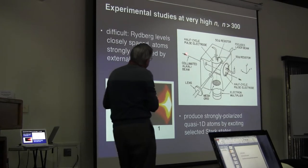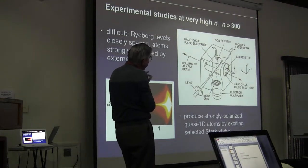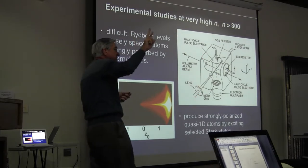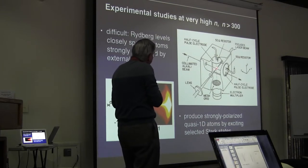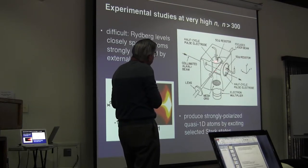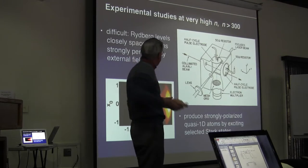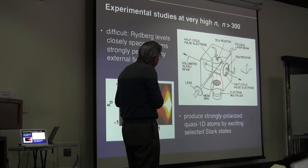We can reduce stray fields down to values of less than 50 microvolts per centimeter using our apparatus. The basic experimental approach is to start out with a beam of usually potassium atoms. We cross it with the output of an extra-cavity doubled CW dye laser, operating in pulsed mode — we chop the laser output into pulses of about one microsecond duration at about a 20 kilohertz rep rate. We produce a burst of Rydberg atoms — less than one per laser shot — and then apply electric fields by applying voltage pulses to the electrodes, giving the atoms a series of kicks.